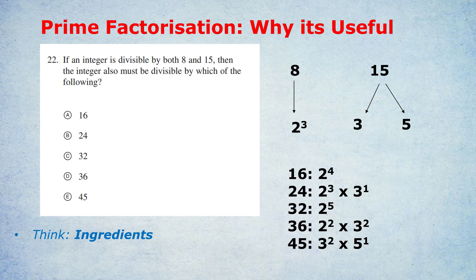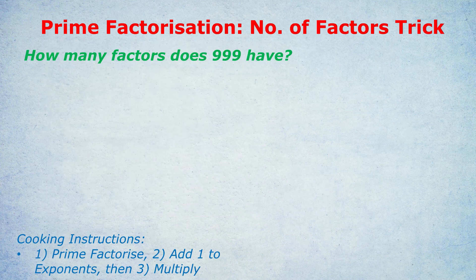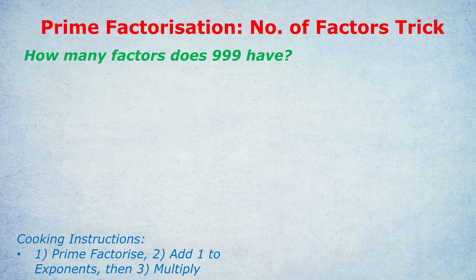I want to get on to another amazing reason why prime factorization is useful, and that is to count the number of factors that a number has. Not many people know this trick, but it's one of my favorites. So let's check it out. How many factors does 999 have? A question like this came up in my GMAT test, but it could also come up in a GRE test. You've got the cooking instructions down below, but I'm going to demonstrate as we go and briefly explain why it works at the end.